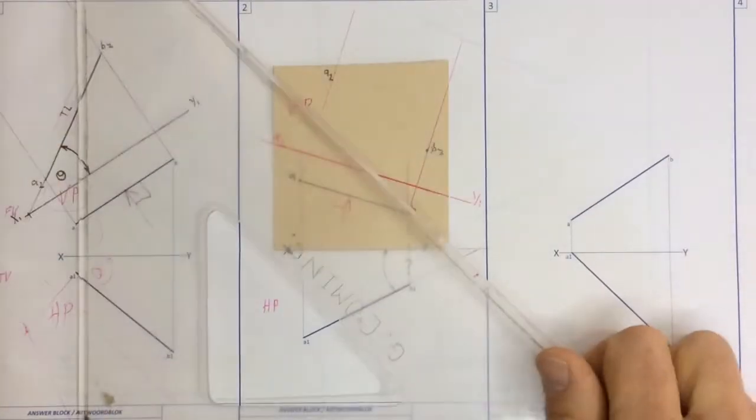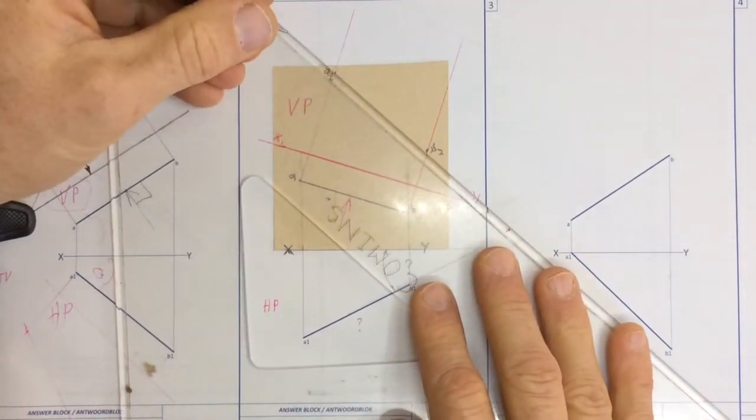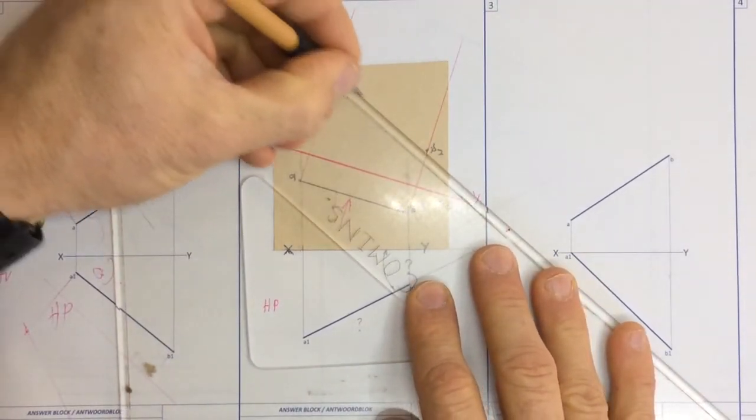Once I've got that, I can now take a line which goes from A to B.